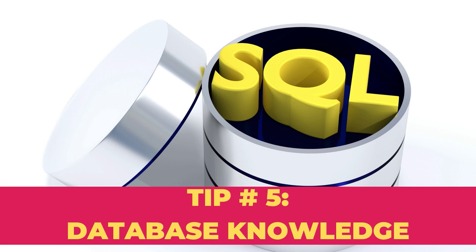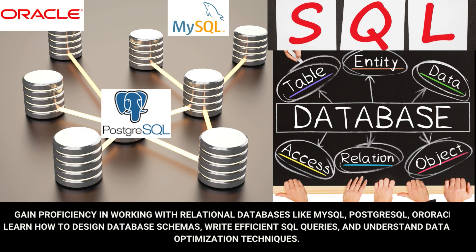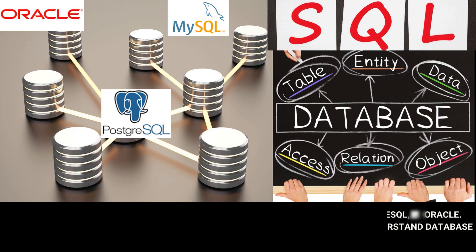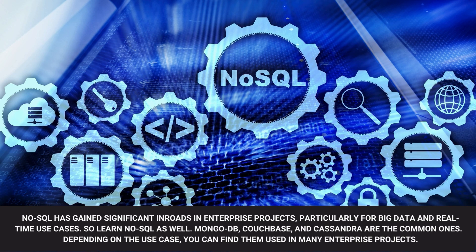Tip number five: Database Knowledge. Gain proficiency in working with relational databases like MySQL, PostgreSQL, or Oracle. Learn how to design database schemas, write efficient SQL queries, and understand database optimization techniques. NoSQL has gained significant traction in enterprise projects, particularly for big data and real-time use cases, so learn NoSQL as well — MongoDB, Couchbase, and Cassandra are common ones used in many enterprise projects.